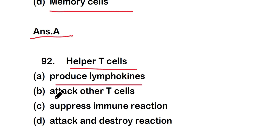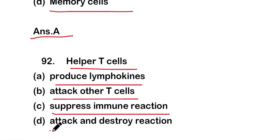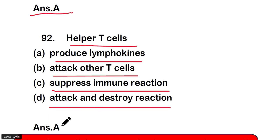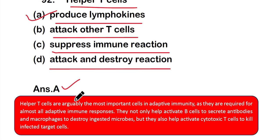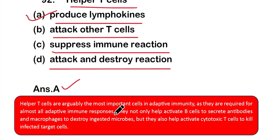Question number 92: Helper T cells — option A: produce lymphokines, option B: attack other T cells, option C: suppress immune reactions, or option D: attack and destroy reactions. The right answer is option A. Helper T cells produce lymphokines and are arguably the most important cells in adaptive immunity — they help activate B cells to secrete antibodies, macrophages to destroy ingested microbes, and cytotoxic T cells to kill infected target cells.